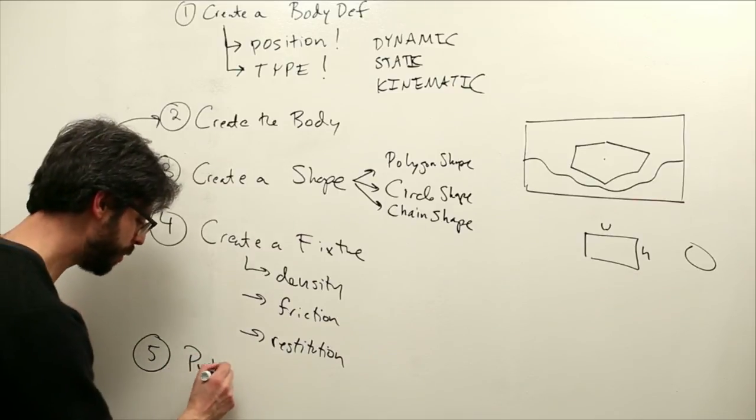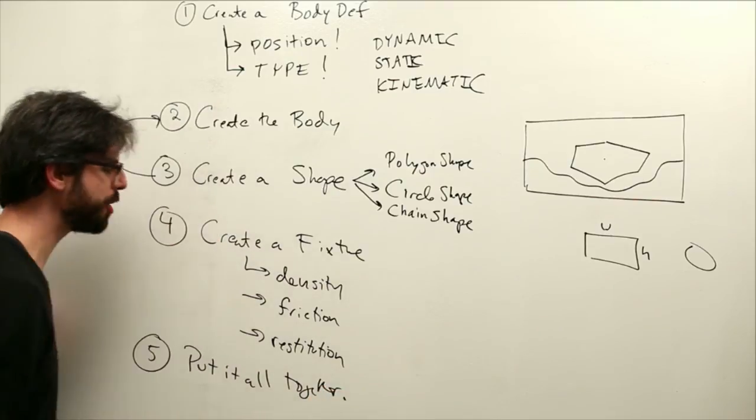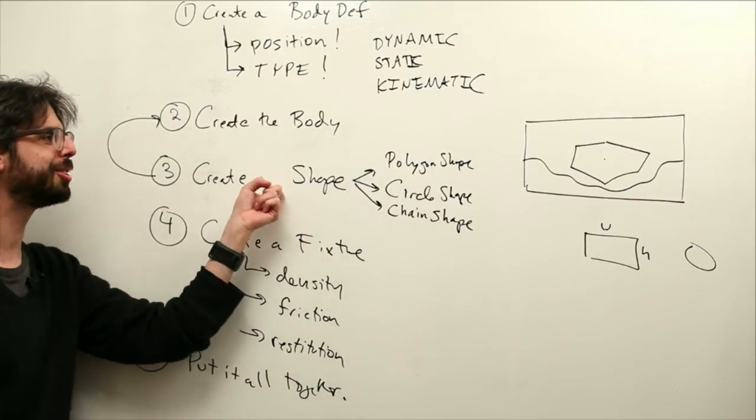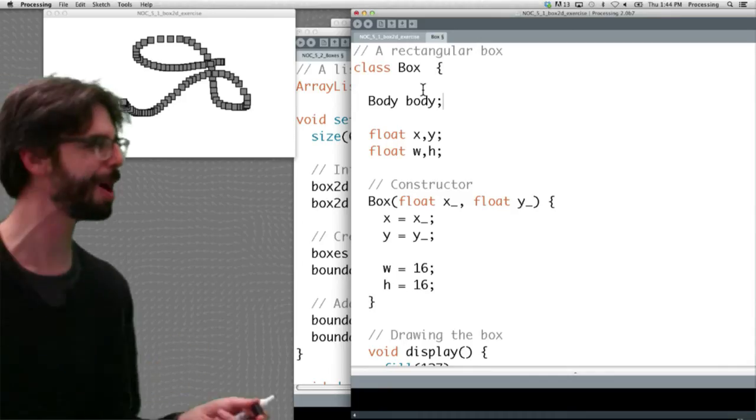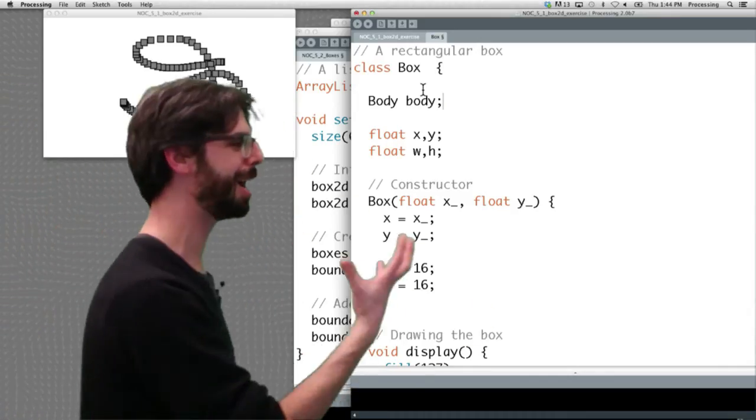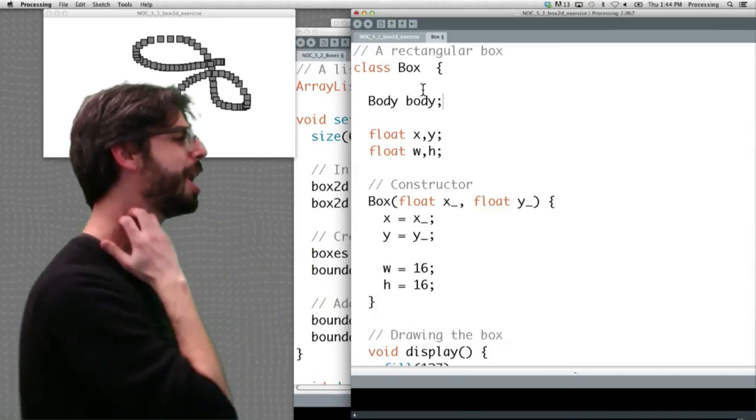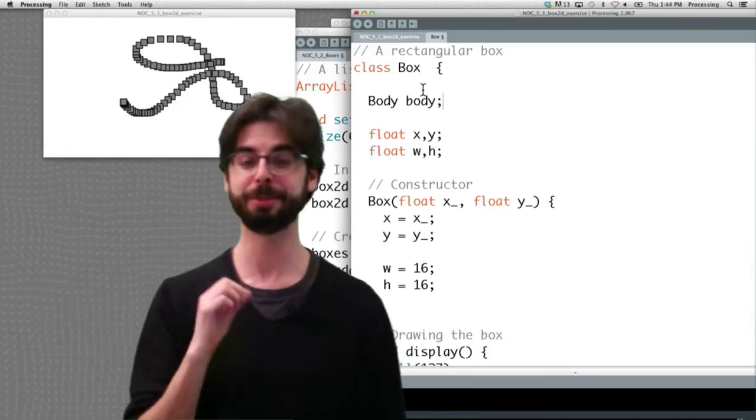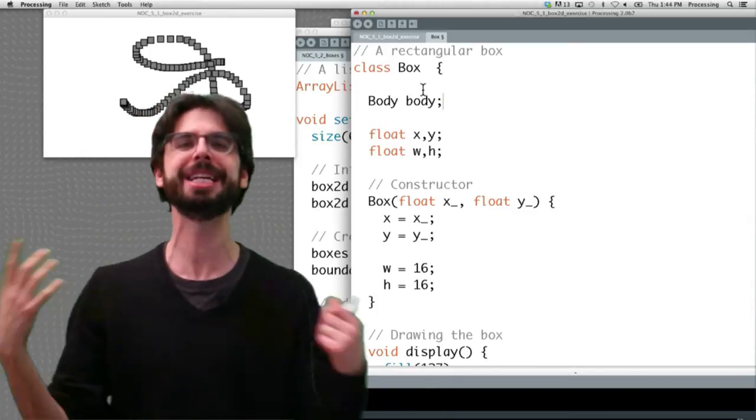And the very last step, which if I'm still on the board here, is kind of put it all together. And I'll just write that out here. Put it all together. Putting it all together means use the fixture to attach the shape to the body. So if you recall, right, we started with this question of I want my box object to instead of me having to add location, velocity, acceleration, work on all the physics, I'm going to add a body to it. I'm just going to put a body object to it, and I need to, you know, probably in the constructor, initialize that body.